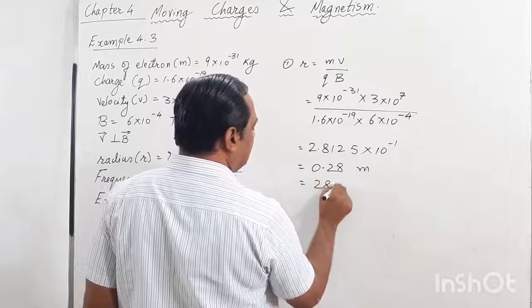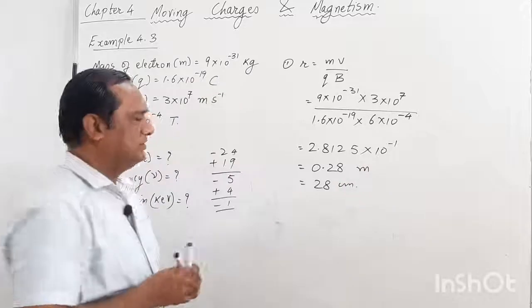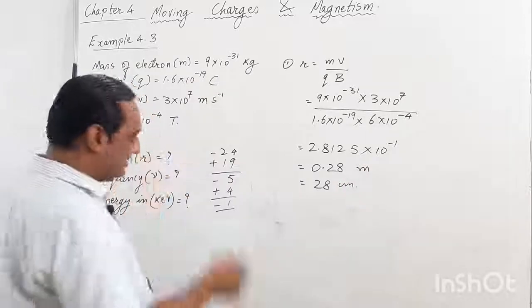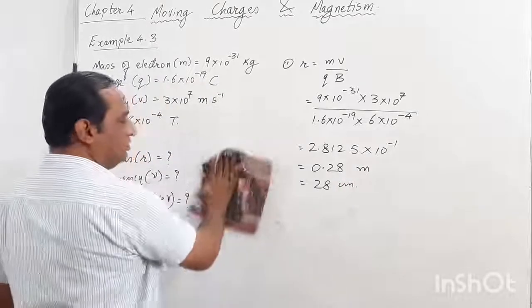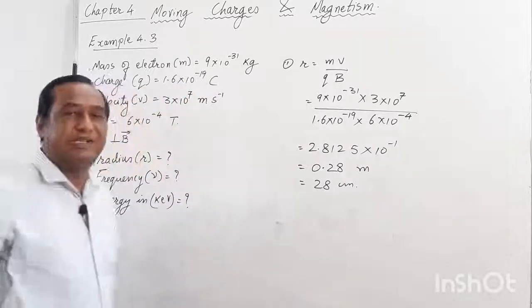This gives approximately 0.28 meters, or 28 centimeters. The book gives 26 centimeters, but that's a small error. That is how we get the radius: 28 centimeters.